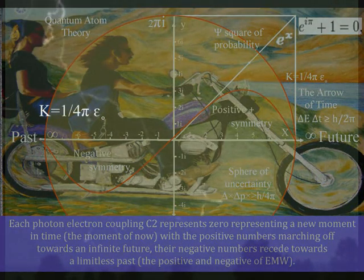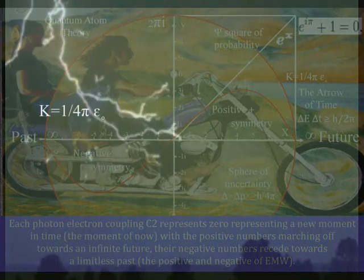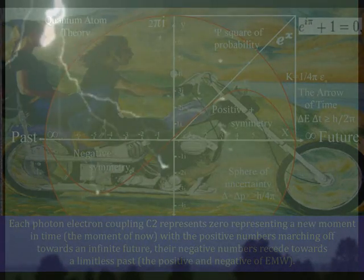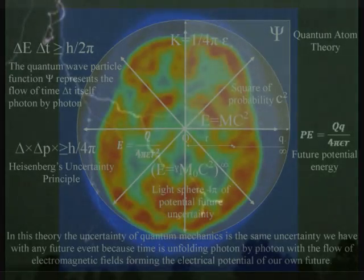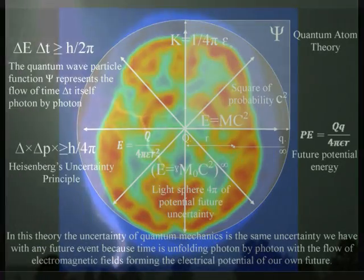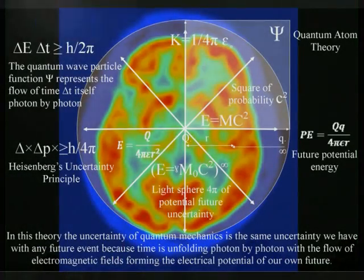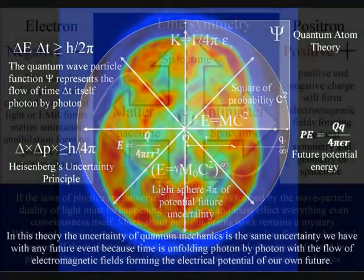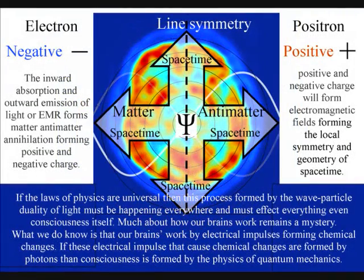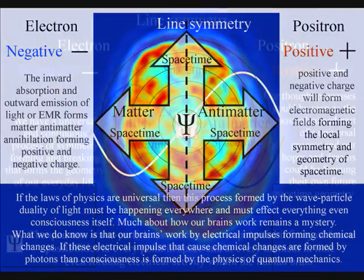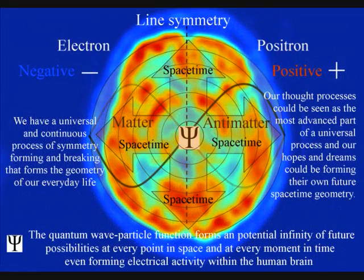In this theory, electrical potential and the individual's future potential are the same within their own reference frame. The most advanced part of this universal process is in the form of electrical activity in the brain — being able to comprehend and measure this process as the flow of time with a past and uncertain future.